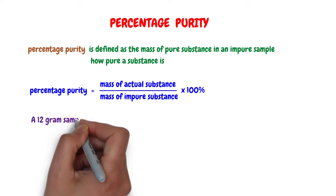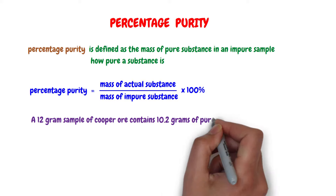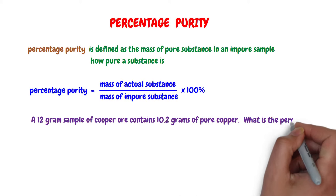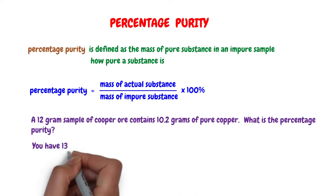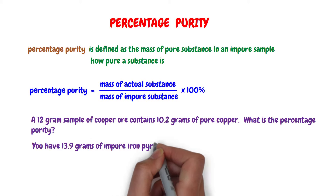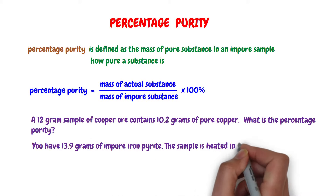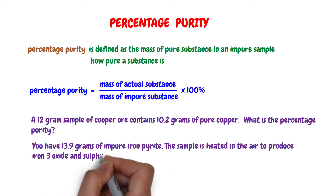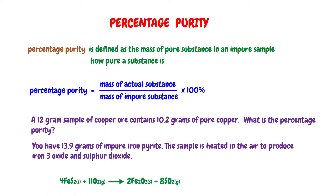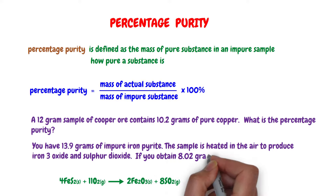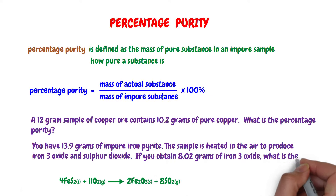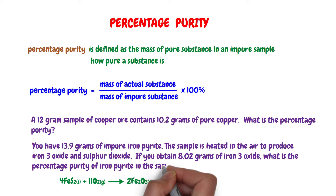Example 1: A 12-gram sample of copper ore contains 10.2 grams of pure copper. What is the percentage purity? Example 2: You have 13.9 grams of impure iron pyrite. The sample is heated in the air to produce iron(III) oxide and sulfur dioxide, shown by the equation: 4 molecules of iron pyrite plus 11 molecules of oxygen produce 2 molecules of iron(III) oxide plus 8 molecules of sulfur dioxide. If you obtain 8.02 grams of iron(III) oxide, what is the percentage purity of iron pyrite in the sample?